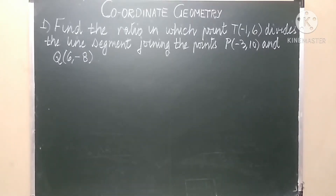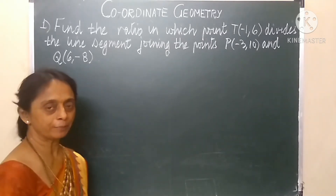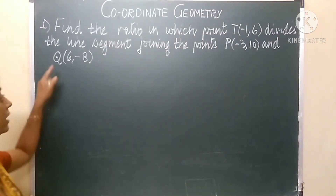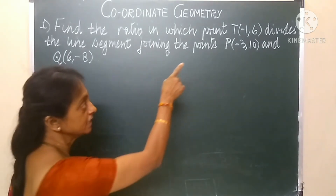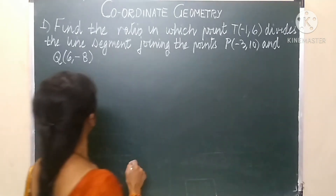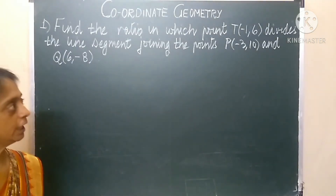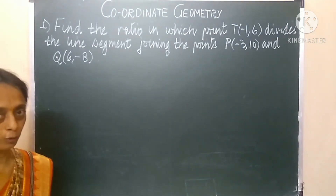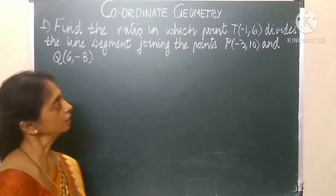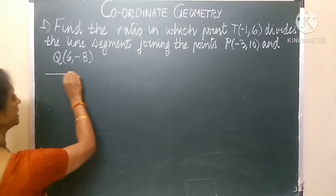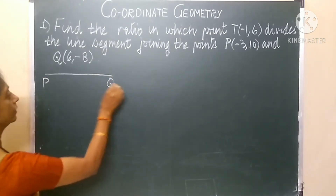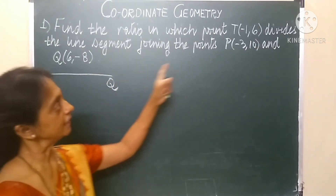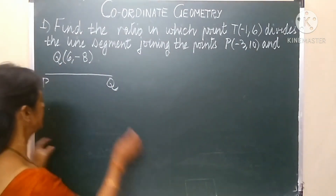Now, towards the next session in Coordinate Geometry, in Solving Practice Set Problems. Looking at the problem given at the board: find the ratio in which point T divides the line segment joining the points P and Q. Given this line segment PQ, dividing it by a point T.